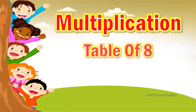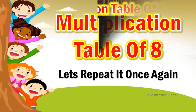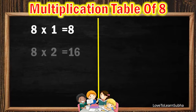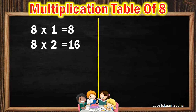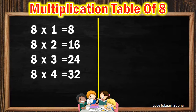Now, let's repeat it once again. 8 ones are 8, 8 twos are 16, 8 threes are 24, 8 fours are 32, 8 fives are 40,